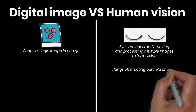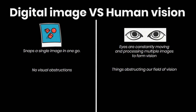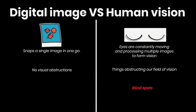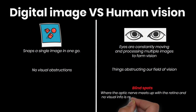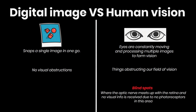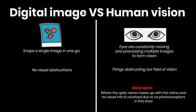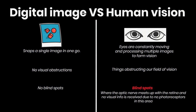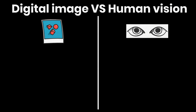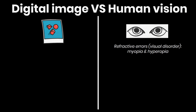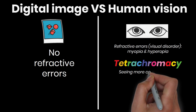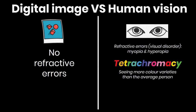The image created by the eye alone during a single glance is not the image which we interpret. Unlike a camera, we've got stuff obstructing our field of vision. For example, we are always looking at our own nose. Luckily, our brain processes these factors out as they're not relevant. We also have blind spots where the optic nerve meets up with the retina, and no visual information is received due to no photoreceptors in this area. Additionally, humans can have refractive errors such as myopia and hyperopia. It's also possible for one to have tetrachromacy, which means they are able to see more colour varieties than the average person.